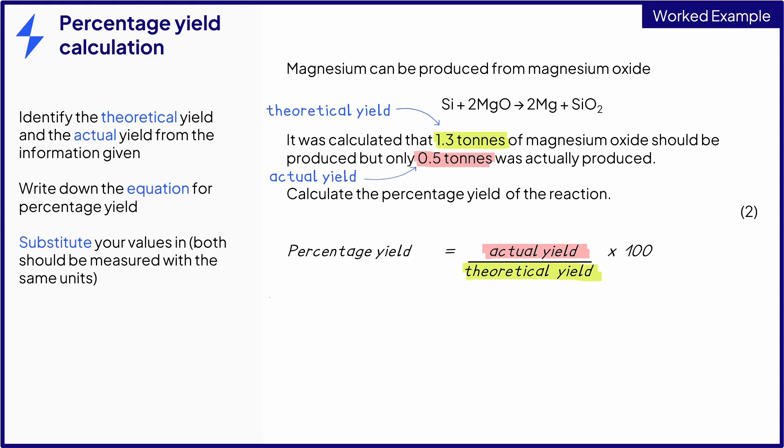Remember, the actual yield, which will always be the smaller value, will be on the top of this equation. Substituting our values gives us this equation. From this, we can then calculate our final answer.